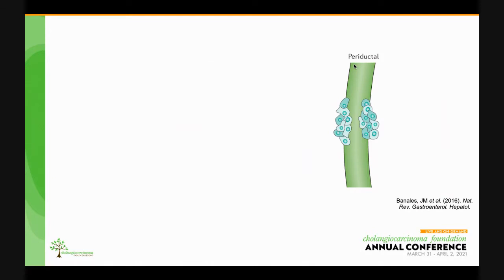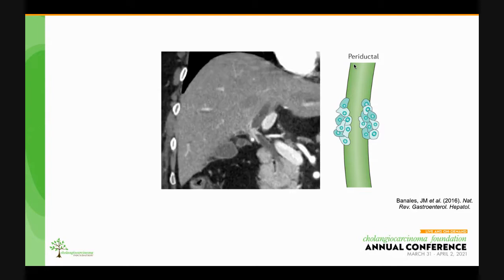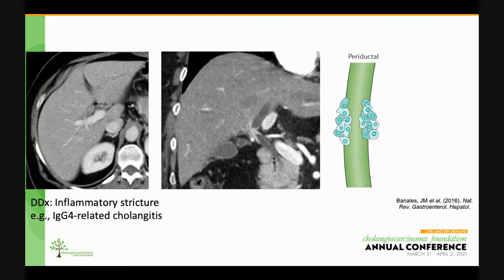The periductal infiltrating type typically begins as tumor cells infiltrating the wall of the bile duct, which results in bile duct wall thickening and enhancement, as you can see in the proximal left hepatic duct and the common hepatic duct in this case. The lumen of the duct is narrowed, resulting in a stricture. There is upstream biliary dilatation. The wall of the uninvolved bile duct, more proximal to the stricture as well as more distal, is usually of normal thickness. Differential diagnosis for this type of cholangiocarcinoma would be with an inflammatory stricture, which also demonstrates wall thickening and enhancement, as in this example of IgG4-related cholangitis.